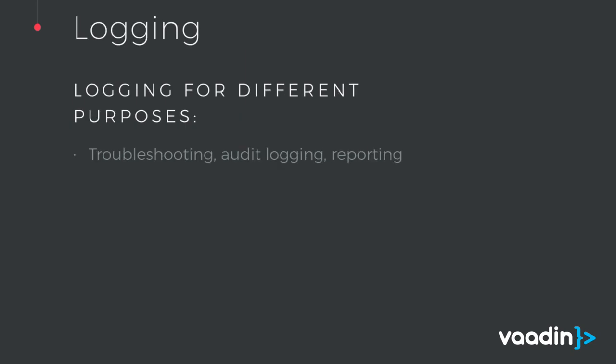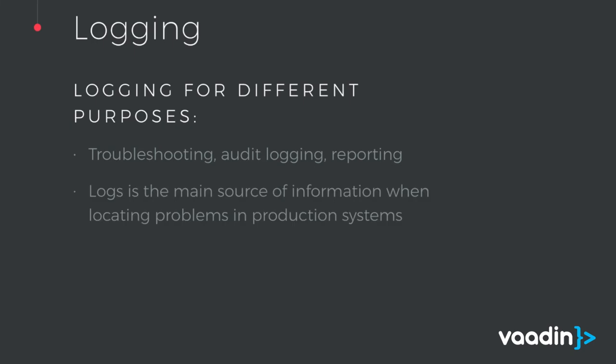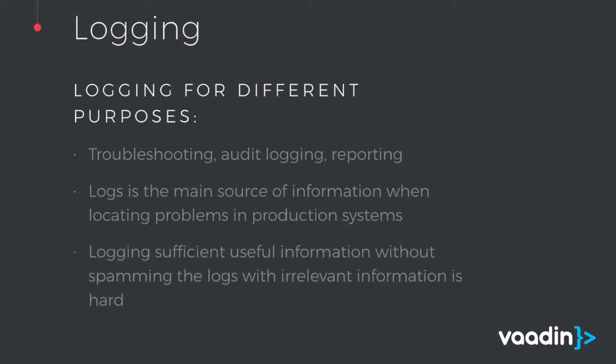A few words about logging. Logging is the main tool of a maintenance person trying to solve production issues. There are different types: troubleshooting logging, audit logging, and reporting. You need logging to get information out of production systems, since most of the time you cannot just go to production and test something that fails — you might not have the correct access rights. It's always quite difficult to know how much logging is enough. You want enough information, but you don't want to log everything, because with anything more than a very simple application you will be getting a lot of logs. Try to keep the logs relevant.